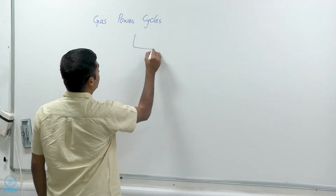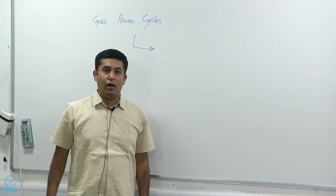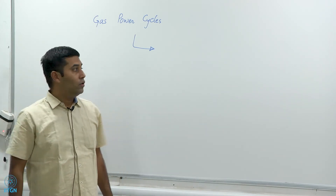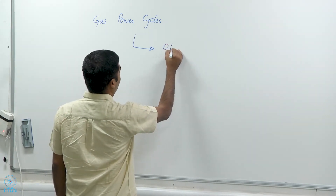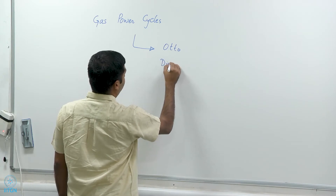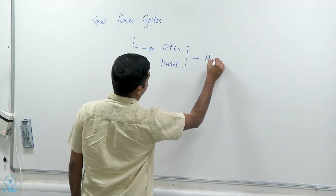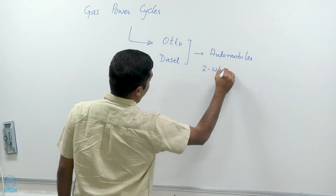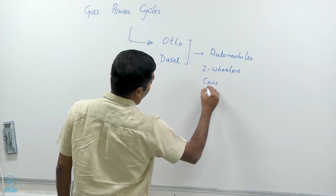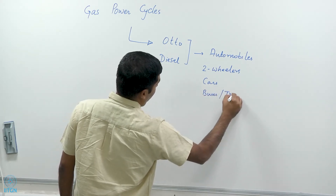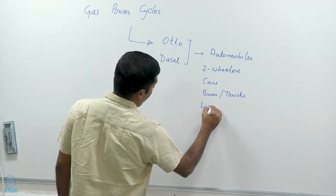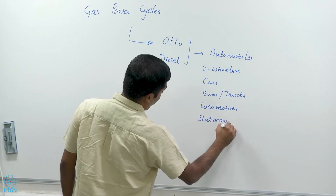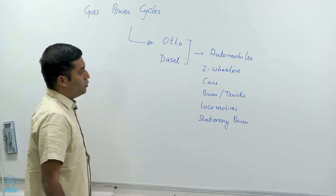There are many gas power cycles used in many applications such as automobiles, aircraft, and power production. For example, the Otto cycle and the diesel cycle are used in automobiles, two-wheelers, cars, buses, trucks, and diesel locomotives, as well as for stationary power generation — they are used very extensively.